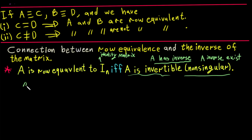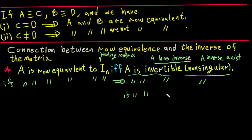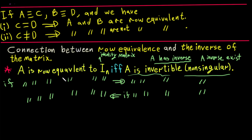So if A is row equivalent to the identity matrix, then A is invertible and non-singular. And going the other way: if A is invertible or non-singular, then A is row equivalent to the identity matrix. This biconditional is very important to know whether a matrix has an inverse or not.